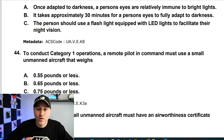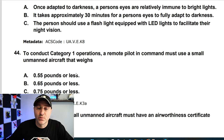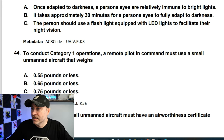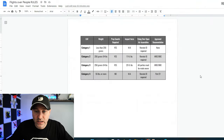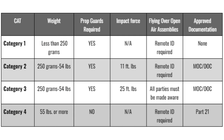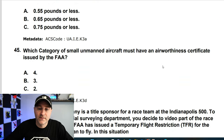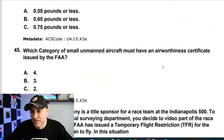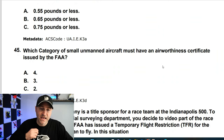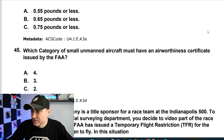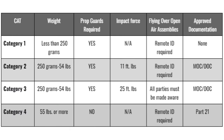To conduct category one operations, a remote pilot in command must use a small unmanned aircraft that weighs 0.55 pounds or less. Which category of small unmanned aircraft must have an airworthiness certificate issued by the FAA? According to the categories chart, that's going to be category four.